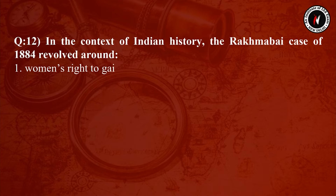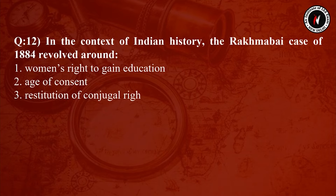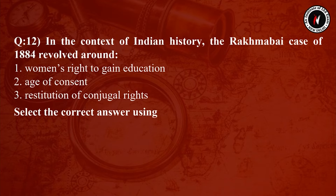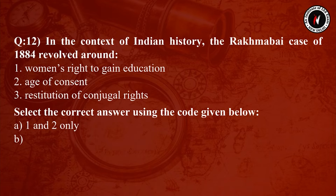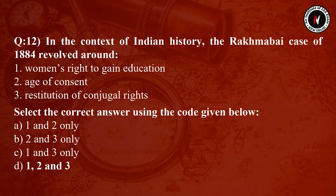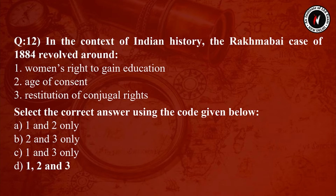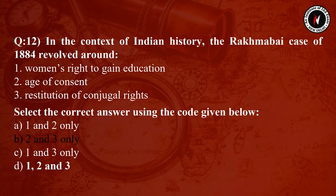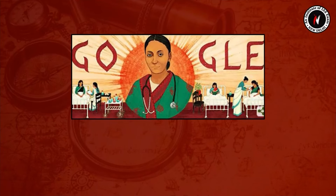Question number 12: In the context of Indian history, the Rukmabai case of 1884 revolved around — Statement 1: women's right to gain education. Statement 2: age of consent. Statement 3: restitution of conjugal rights. Select the correct answer: Option A: 1 and 2 only. Option B: 2 and 3 only. Option C: 1 and 3 only. Option D: 1, 2 and 3.